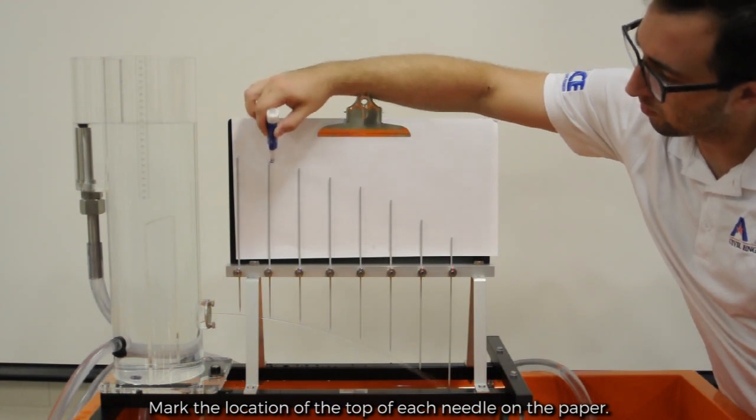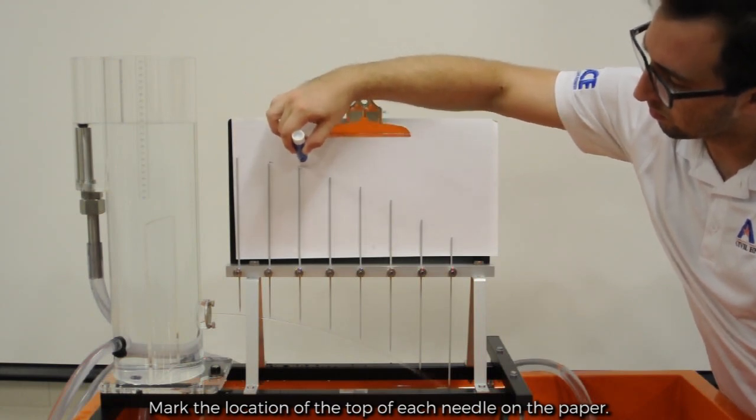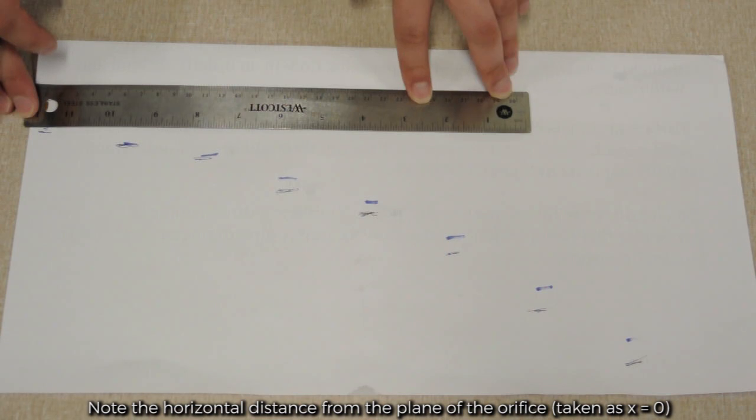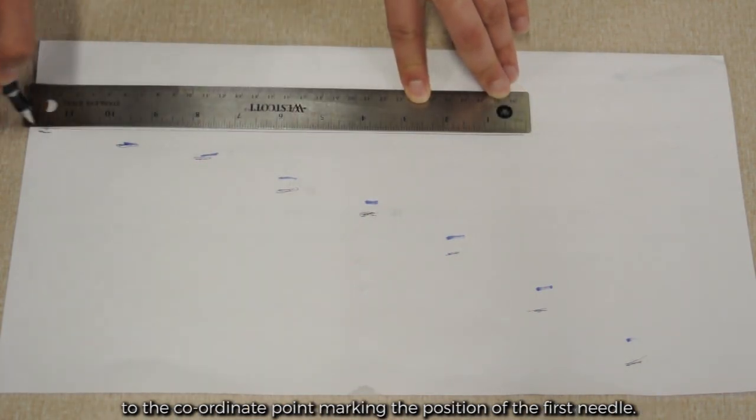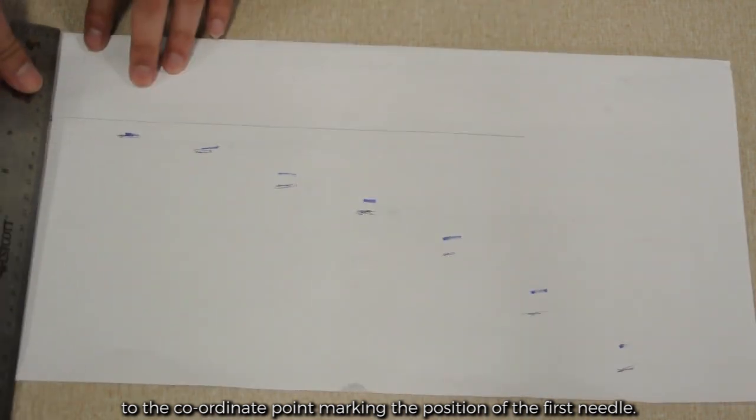Mark the location of the top of each needle on the paper. Note the horizontal distance from the plane of the orifice, taken as x equals 0, to the coordinate point marking the position of the first needle.